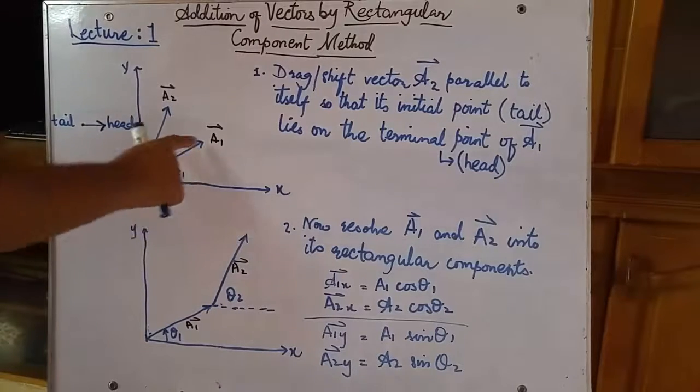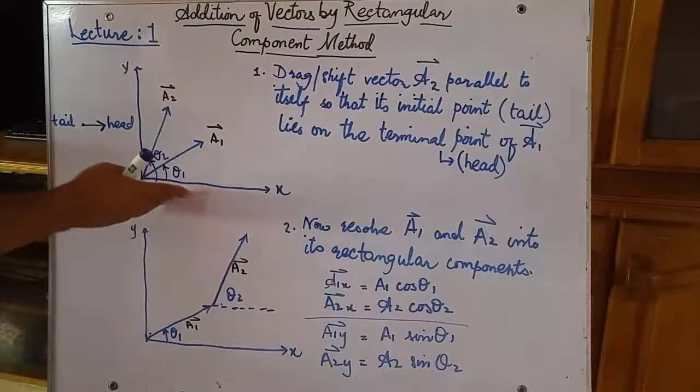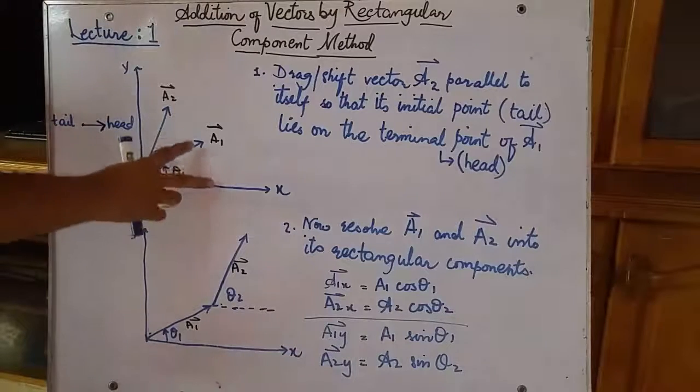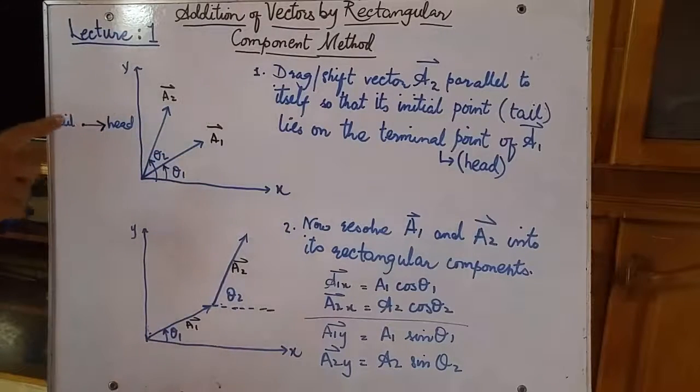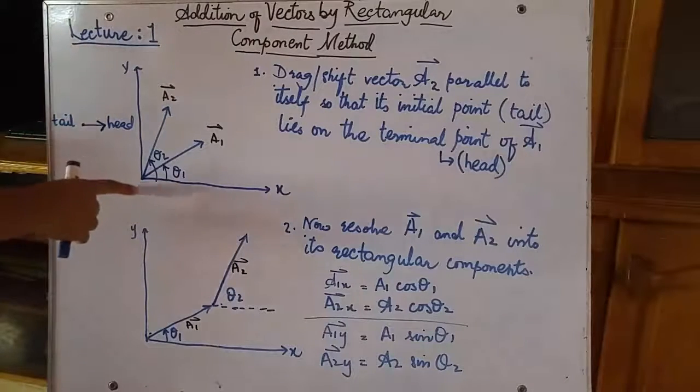The first vector is A1, and it is making an angle theta1 counterclockwise from the x-axis. A2 is making theta2 from the x-axis. Before we can apply head-to-tail rule on these two vectors, there is one thing that we need to consider, and that is: these two vectors have a common tail, that is, both vectors are originating from the same point.